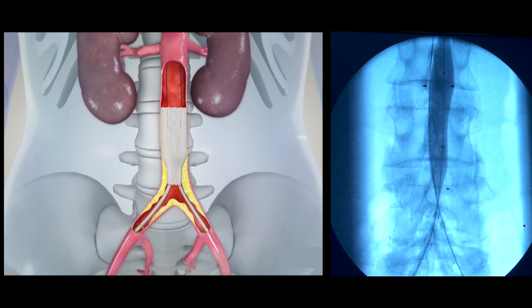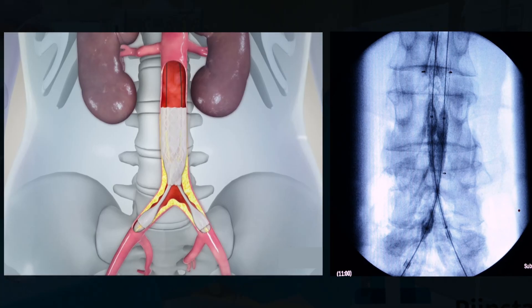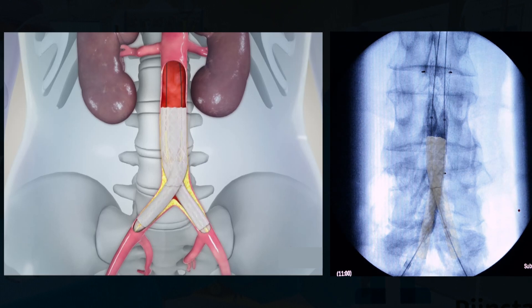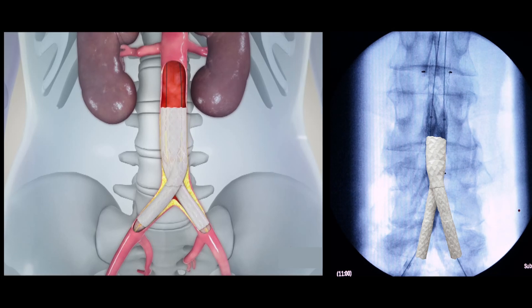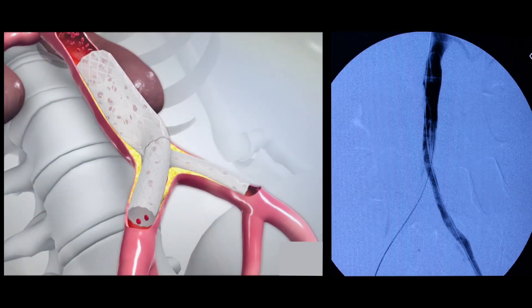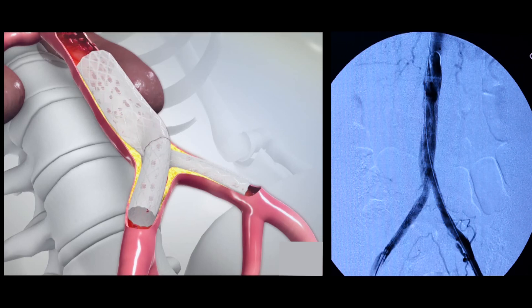When this stent is placed, two extra stents are being placed into the first stent on both iliac arteries to get the final result. On the final angiogram, you can see that the abdominal aorta and the iliac arteries have a normal patency.